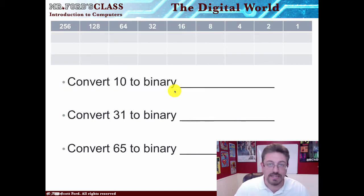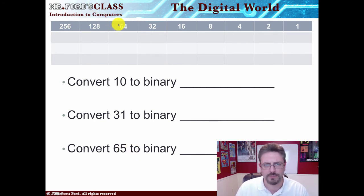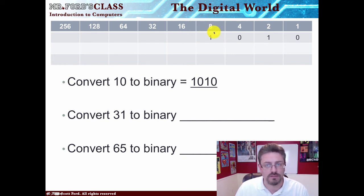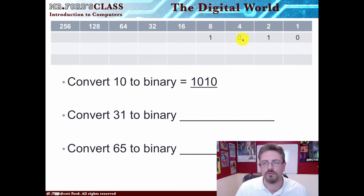Let's see if we're paying attention. If you want to pause the video, now would be a good time to try converting these numbers yourself. Remember, the first thing you want to do is create the table up top. Converting 10 to binary: does 16 go into 10? No. Does 8 go into 10? Yes — 8, 9, 10 — we have 2 left. Does 4 go into 2? No. Does 2 go into 2? Yes, now we have 0. Does 1 go into 0? No. So in binary, 10 is 1, 0, 1, 0.